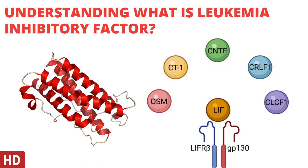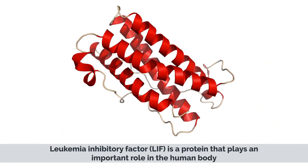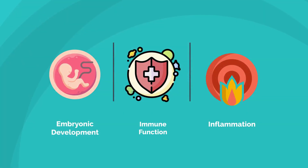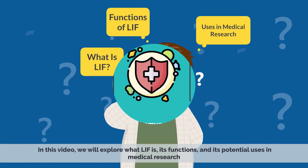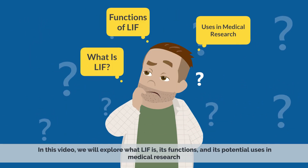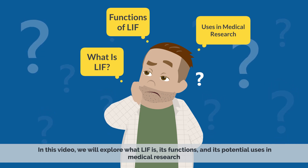Today's video topic is understanding what is Leukemia Inhibitory Factor, LIF, and why it is important. Leukemia Inhibitory Factor, LIF, is a protein that plays an important role in the human body. It is involved in a variety of biological processes including embryonic development, immune function, and inflammation. In this video, we will explore what LIF is, its functions, and its potential uses in medical research.